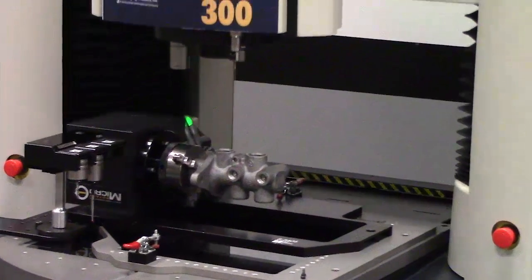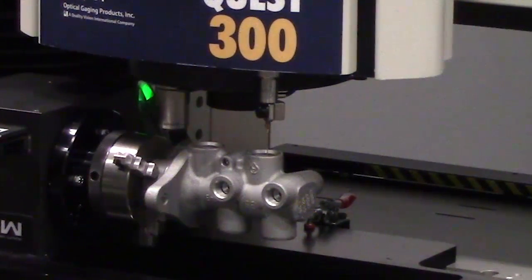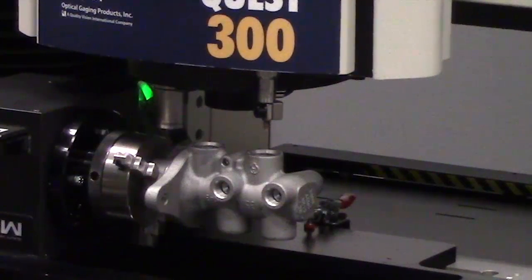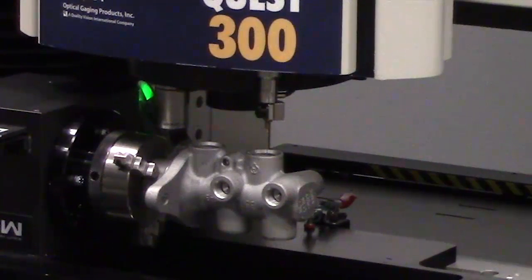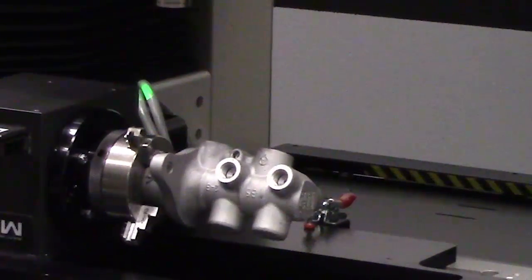Shown here is also our feather probe technology. This uses a stylus that is one millimeter or less and has a measurement force of less than one milligram. This allows for measurements that were traditionally thought to be unattainable. The feather probe is deployed when needed and retracted when not in use to ensure it is not in the way of other sensors.